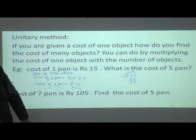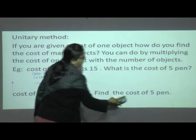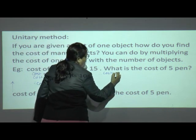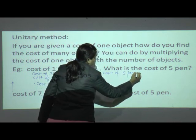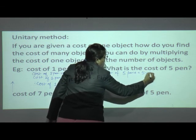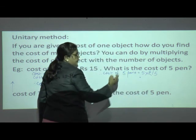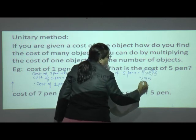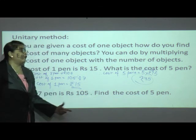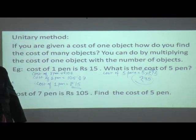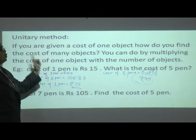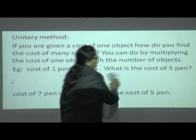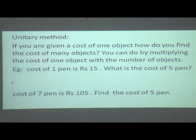Now I know the cost of one pen is rupees 15. My friend is asking for five pens, so I have to multiply. Therefore, cost of five pens is equal to 5 into rupees 15. Five fives are 25 — 2 carry; five ones are 5 plus 2 is 7. That is rupees 75. How much rupees I have to take from my friend is rupees 75 — the cost of five pens. This is the unitary method: find the cost of one unit first, then do the required operation — division or multiplication.